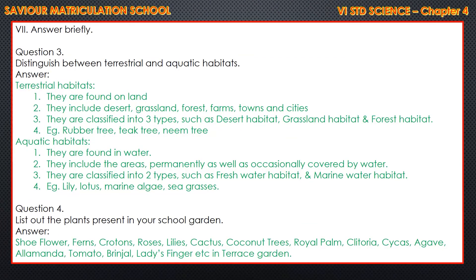Third question: Distinguish between terrestrial and aquatic habitats. Terrestrial habitats are found on land. They include desert, grassland, forest, farms, towns and cities, classified into desert habitat, grassland habitat and forest habitat. Examples: rubber tree, teak tree and neem tree. Aquatic habitats are found in water. They include areas permanently as well as occasionally covered by water, classified into freshwater habitat and marine water habitat. Examples: lily, lotus, marine algae and seagrasses.